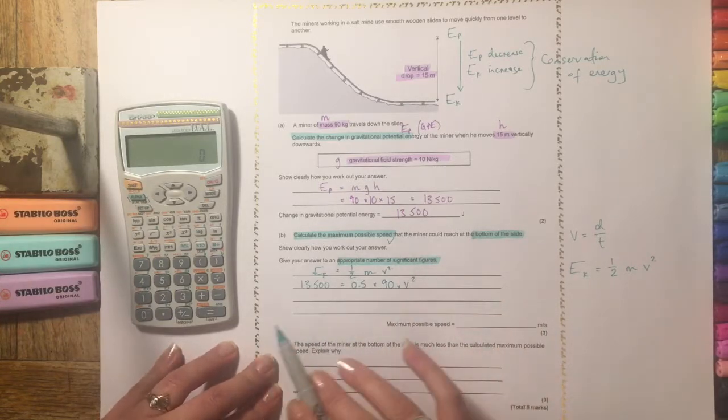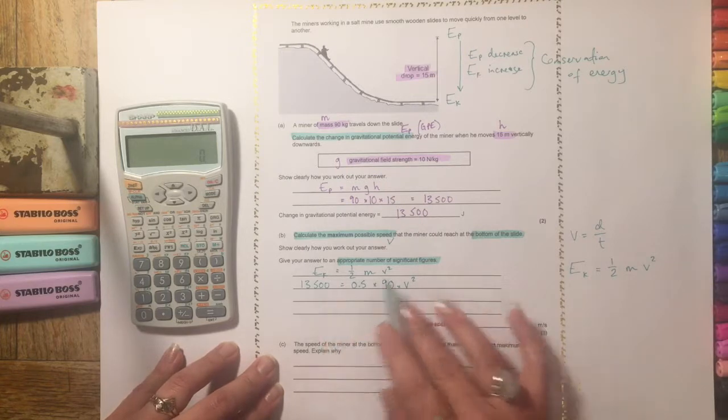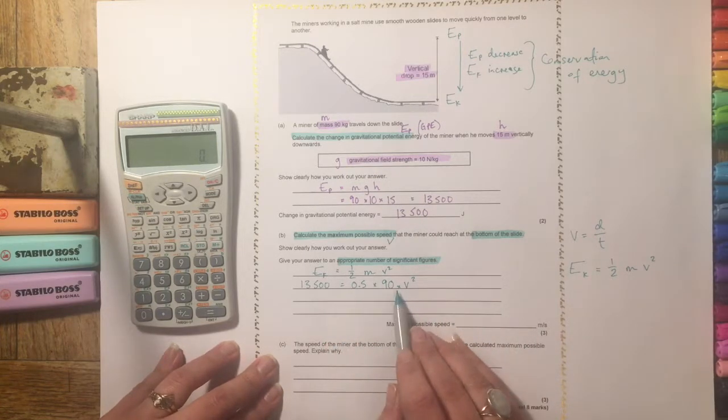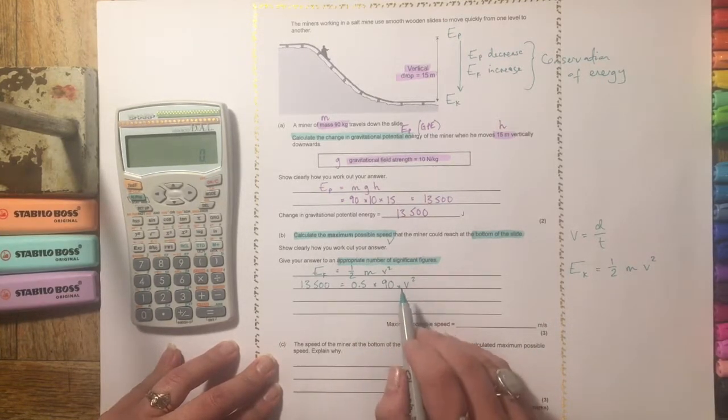So we can do this kind of the same way that you would in math. So we're going to simplify this bit first. So a half times 90. Hopefully you know that times something by a half is the same as dividing by 2.